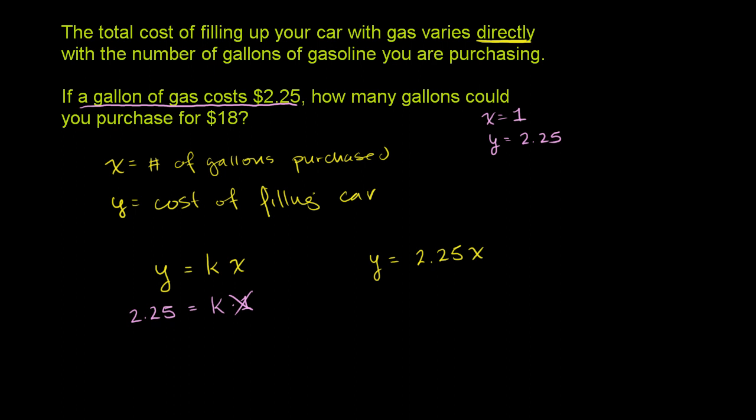And then they ask us, how many gallons could you purchase for $18? So $18 is going to be our total cost. It is y, cost of filling the car. So 18 is going to be equal to 2.25x. Now if we want to solve for x, we can divide both sides by 2.25. So let's do that. You divide 18 by 2.25. Divide 2.25x by 2.25.